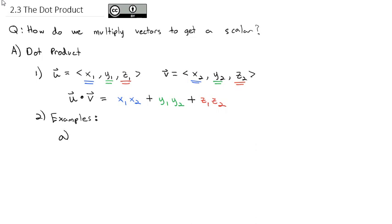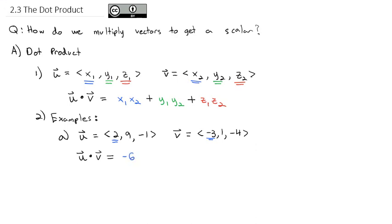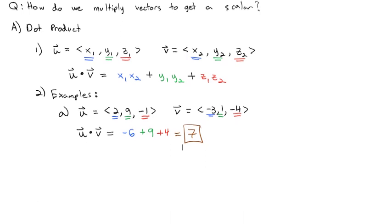For an example, let vector u equal (2, 9, -1) and vector v equal (-3, 1, -4). To calculate u·v, we multiply the corresponding components together: the x's give 2 times -3 = -6; the y's give 9 times 1 = 9; and the z's give -1 times -4 = 4. Adding those together, -6 + 9 + 4 = 7. So the dot product of u and v is 7.